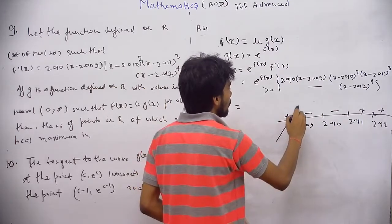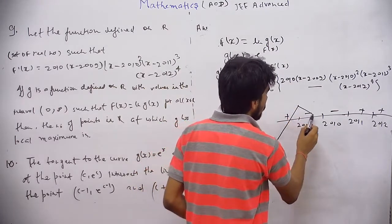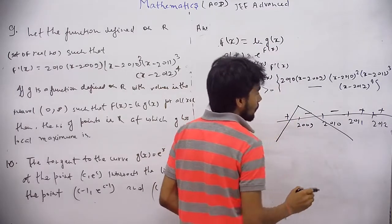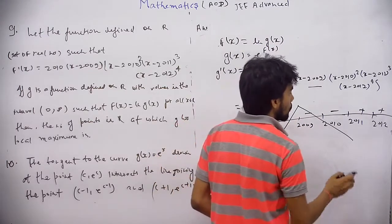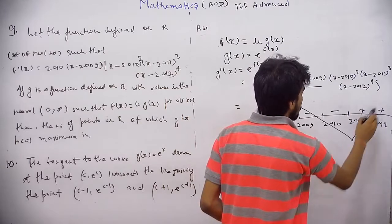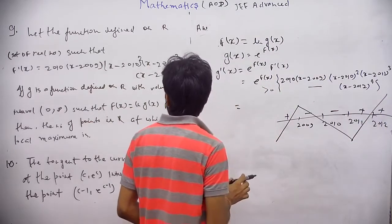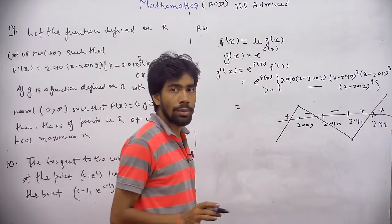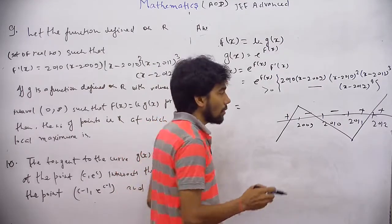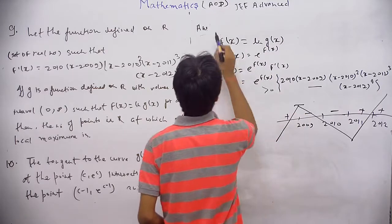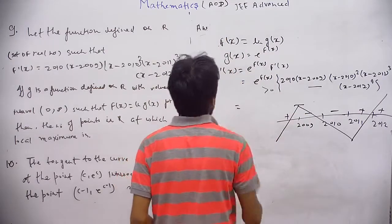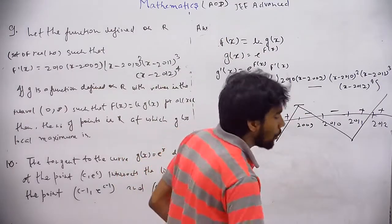So function is increasing. Then it decreases till x approaches 2011 and then increases. So the number of points in R at which g has local maximum. How many points are there? Only one point, okay. There is only one point.